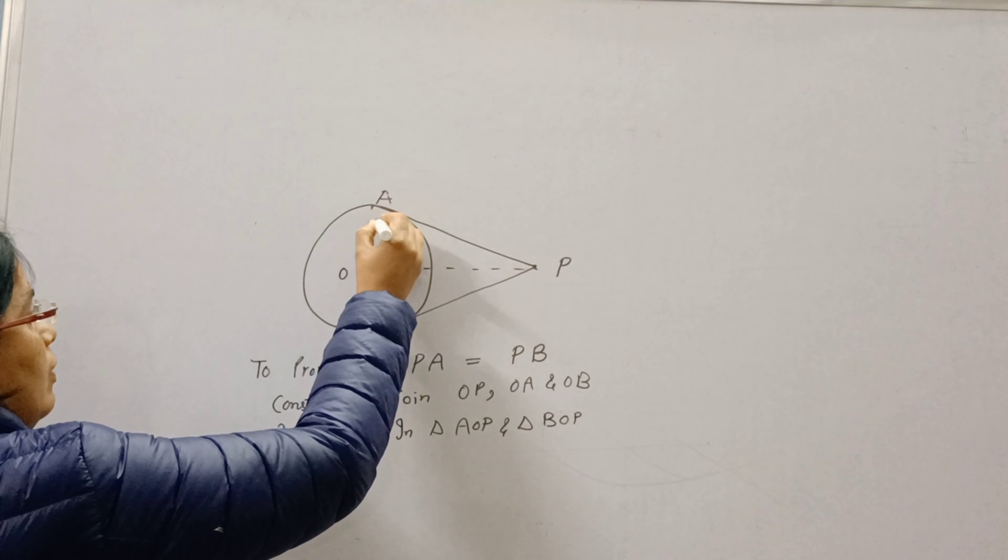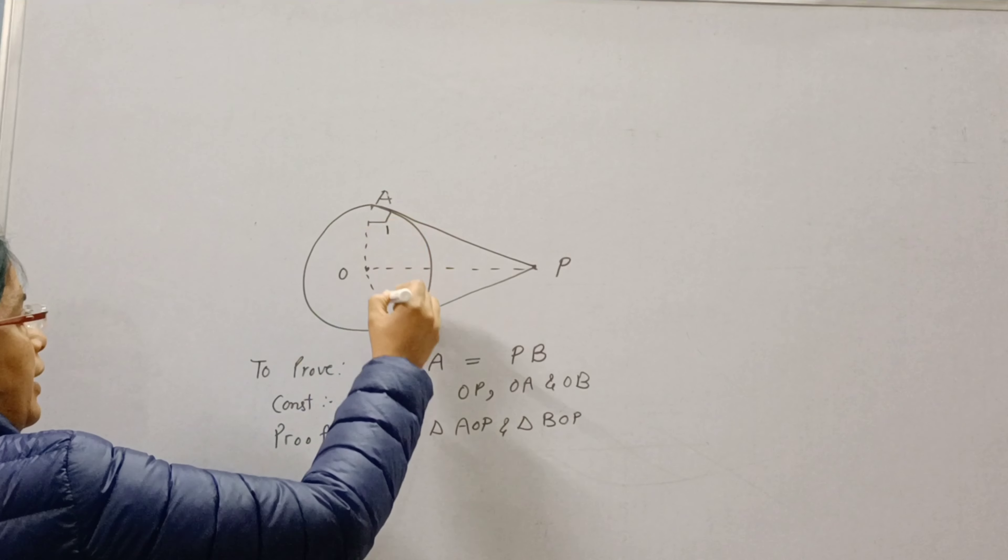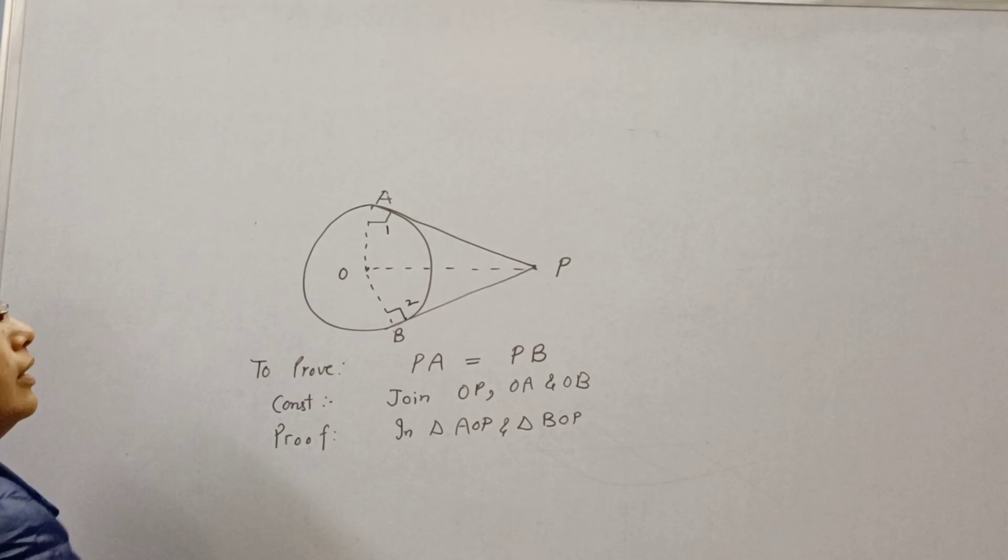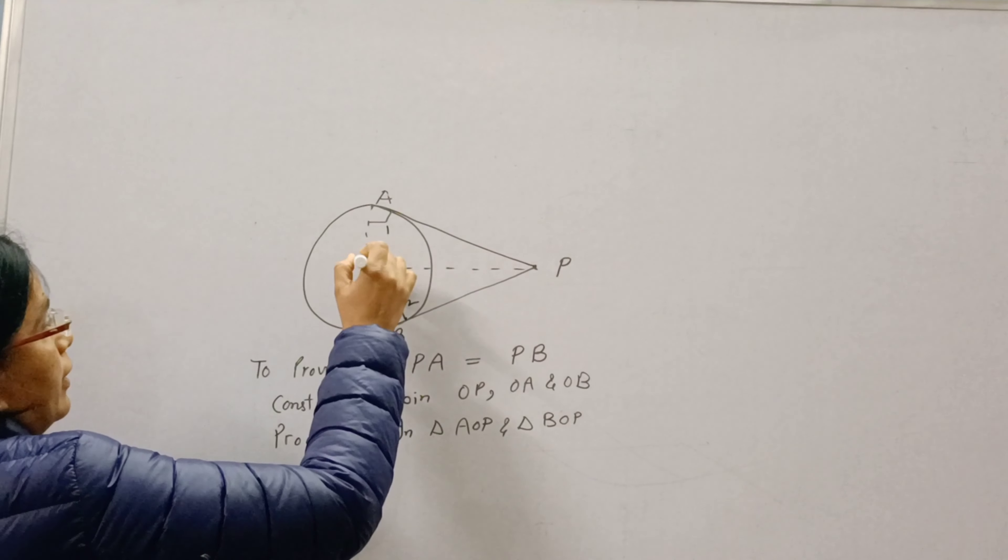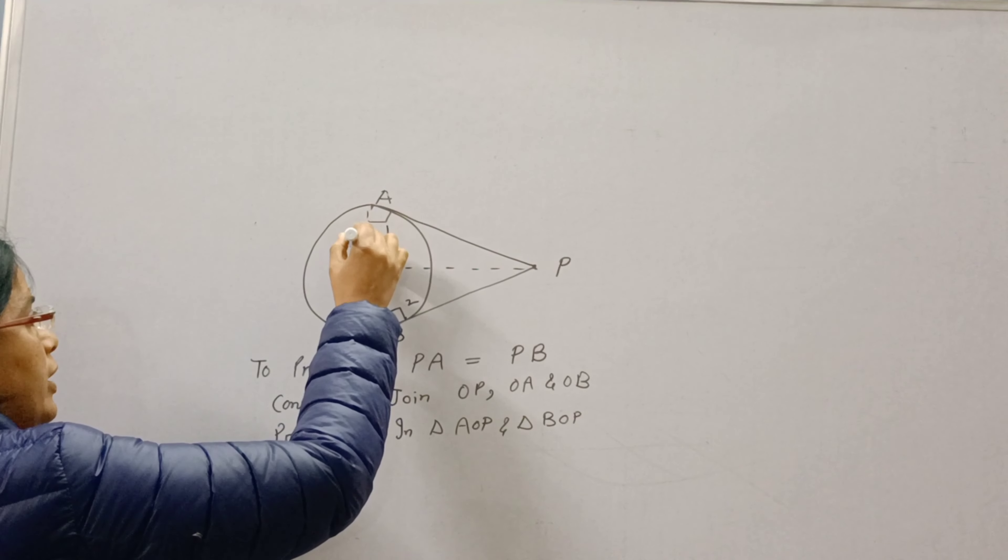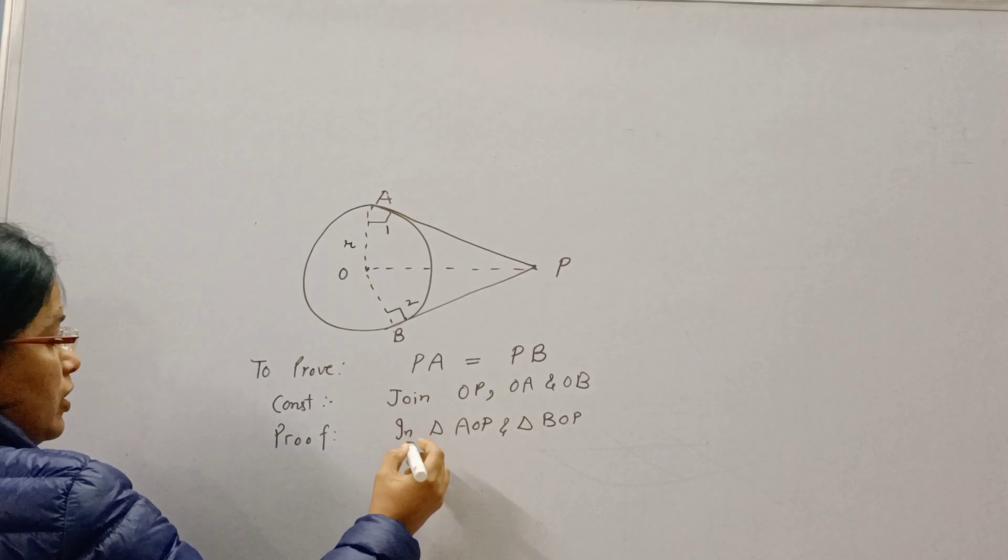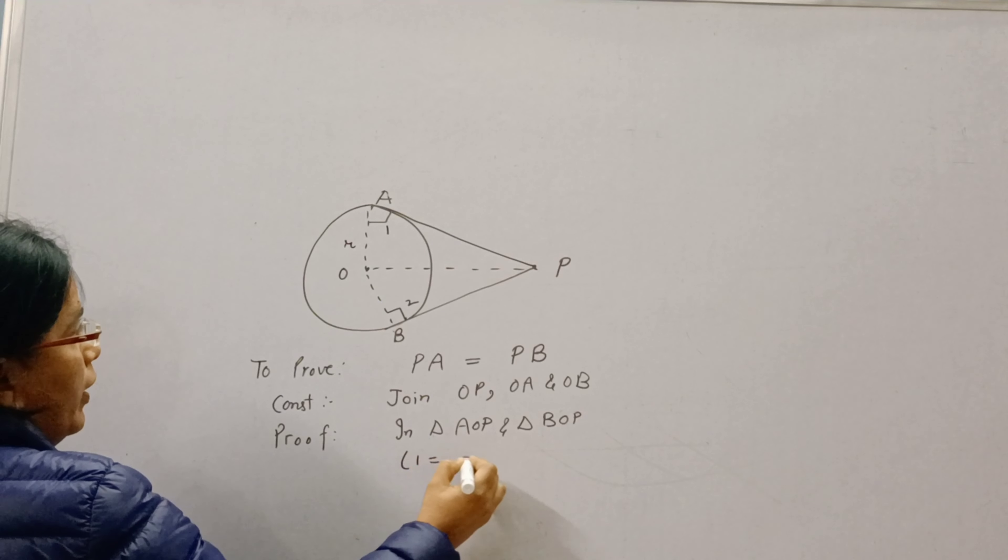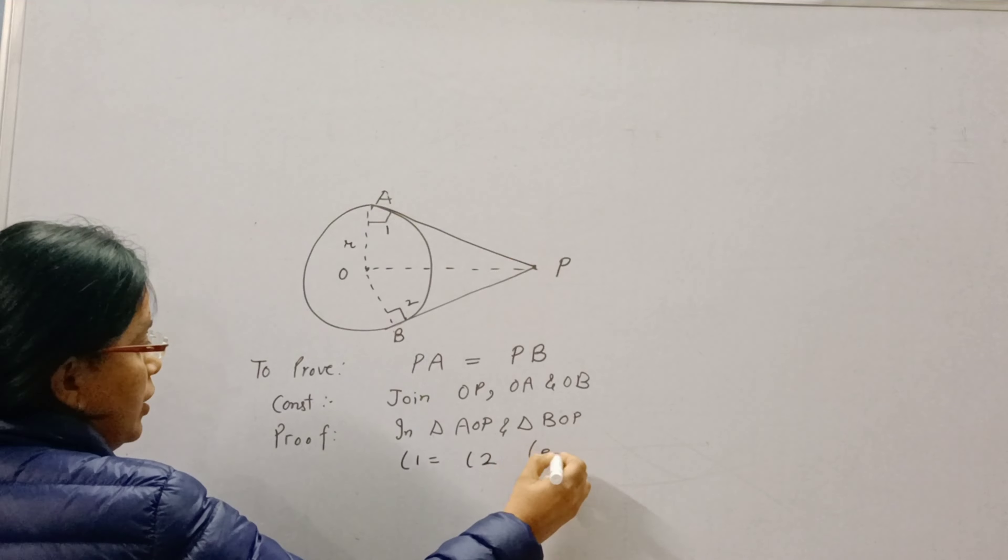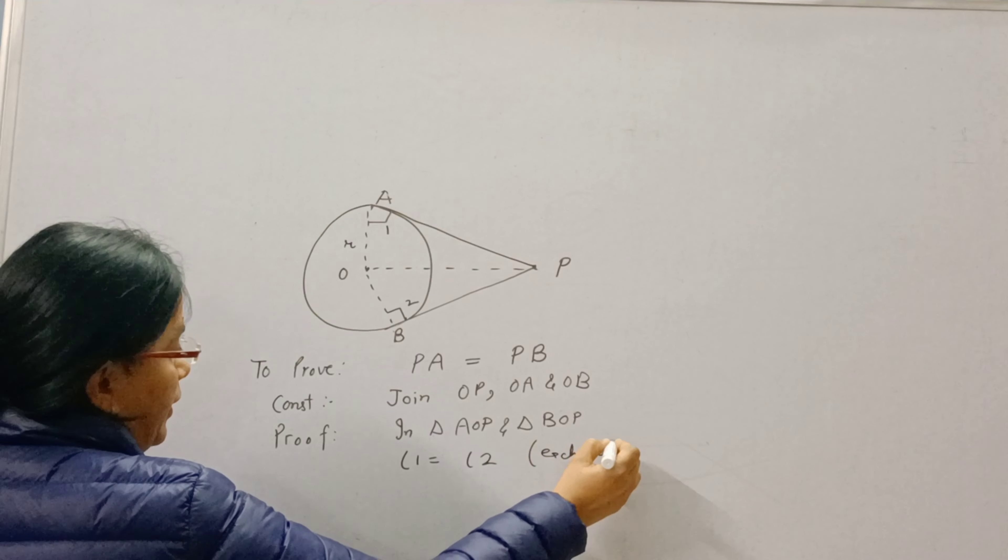Now, see, angle 1 is 90 degrees and angle 2 is 90 degrees. Because radius is perpendicular to tangent. This OA is radius and AP is the tangent. So, we can write angle 1 is equal to angle 2 equals 90 degrees.